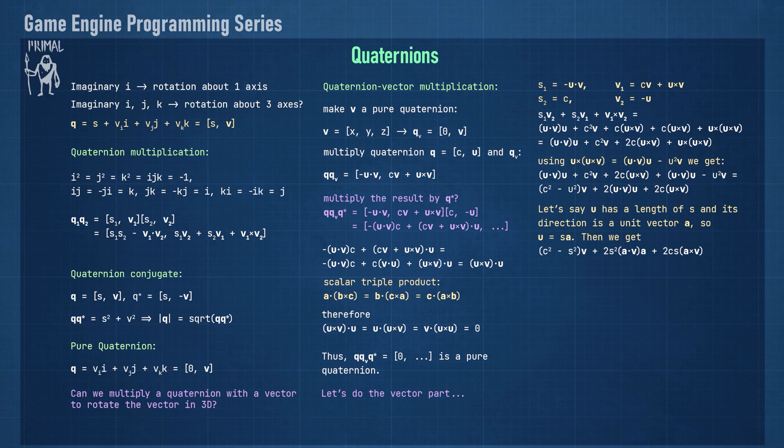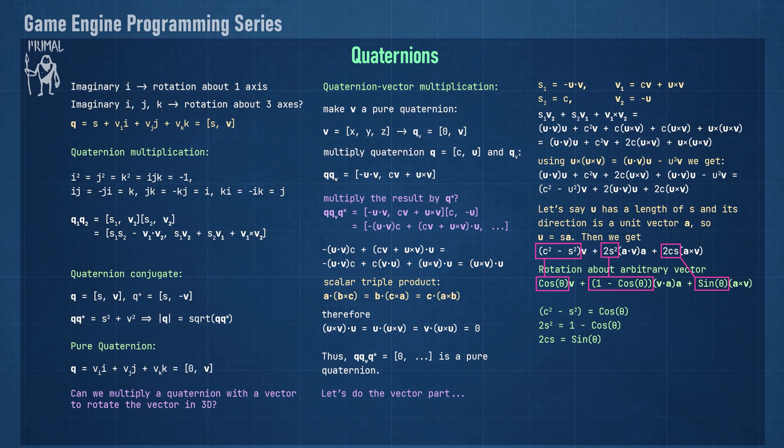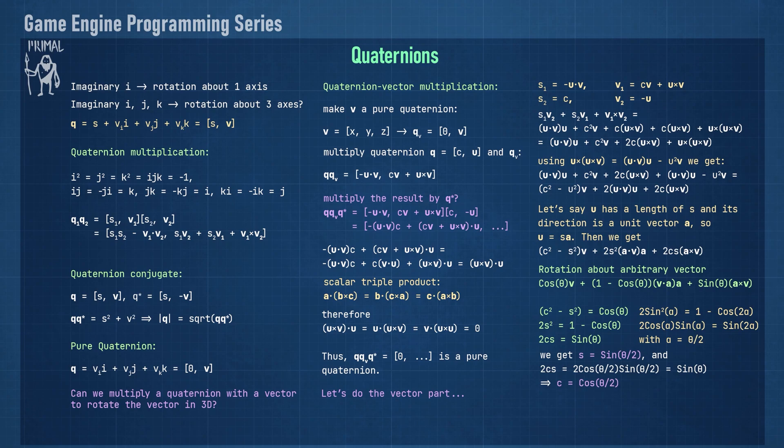Doesn't this look familiar? Remember the formula for 3D rotations about an arbitrary axis? Looking at them together, we see that they are identical if we apply these equalities. All we have to do is to find what c and s should be in terms of theta. Using these trigonometric identities, we get the values for c and s and we have the final form of the rotation quaternion. Notice that putting in half the angle of rotation, we rotate the vector by twice as much, which is what we want.